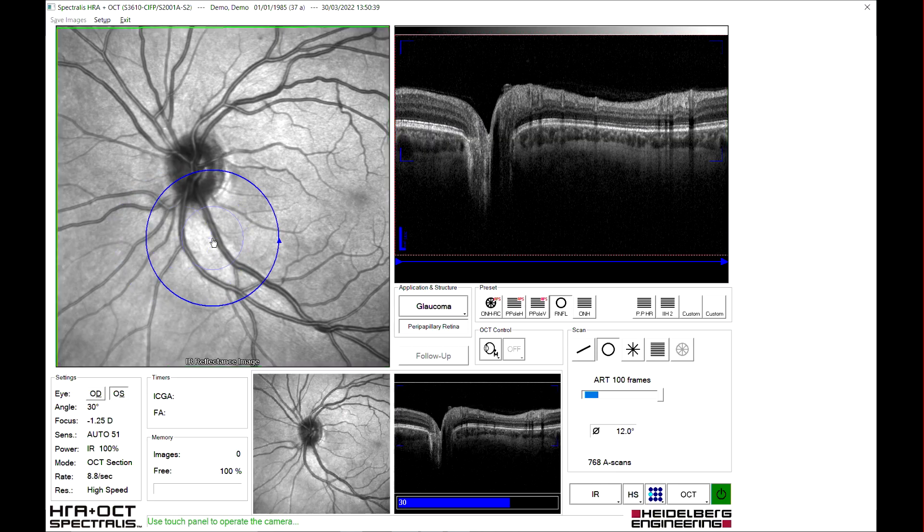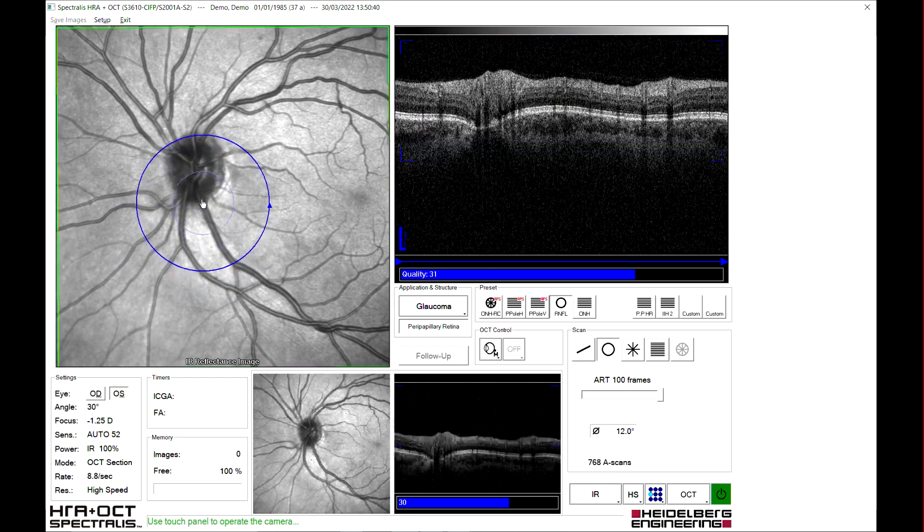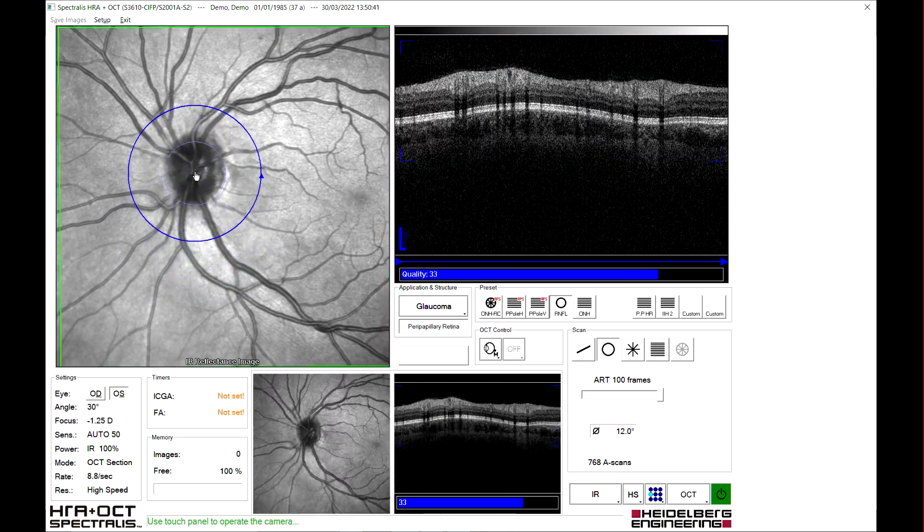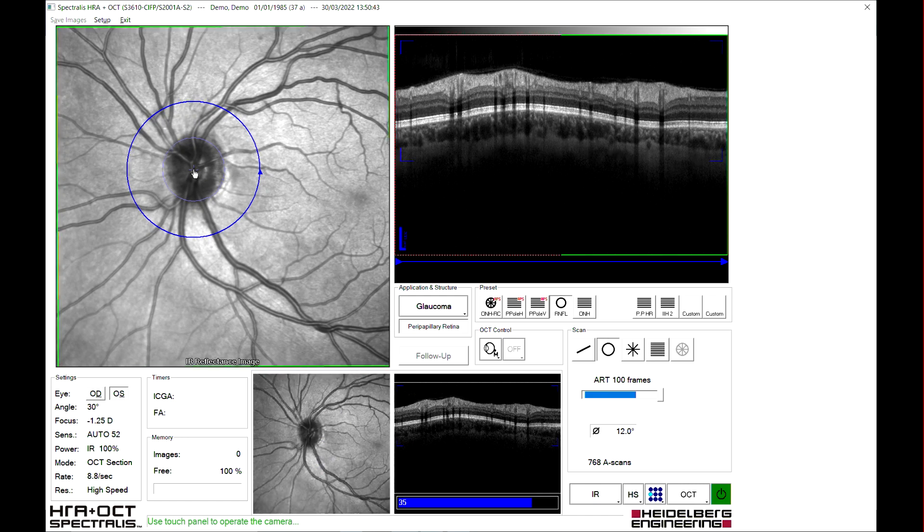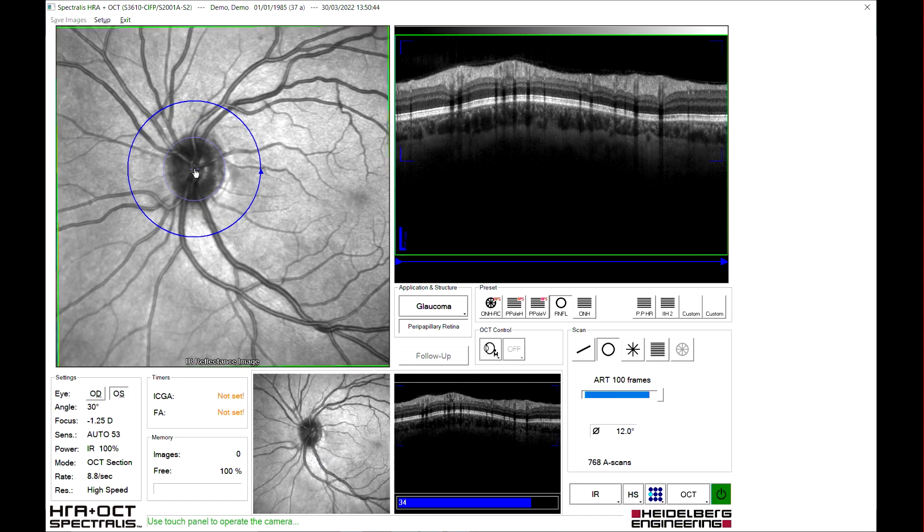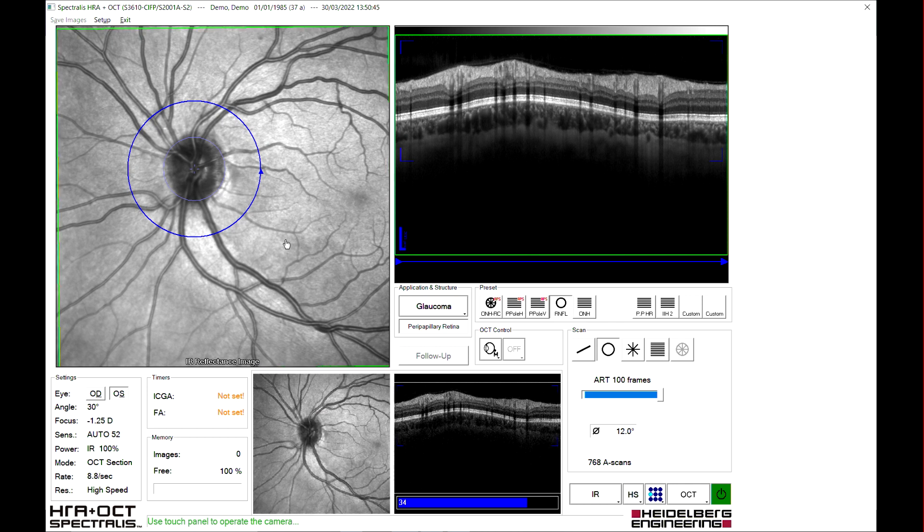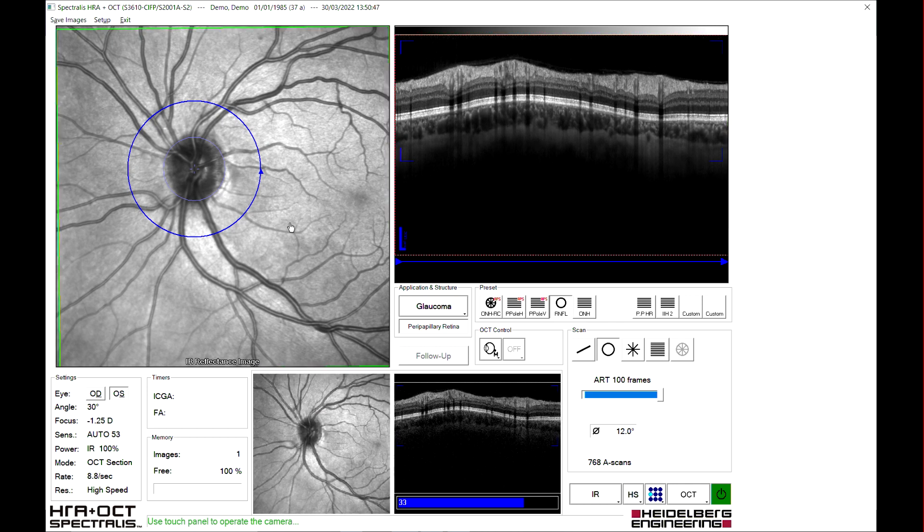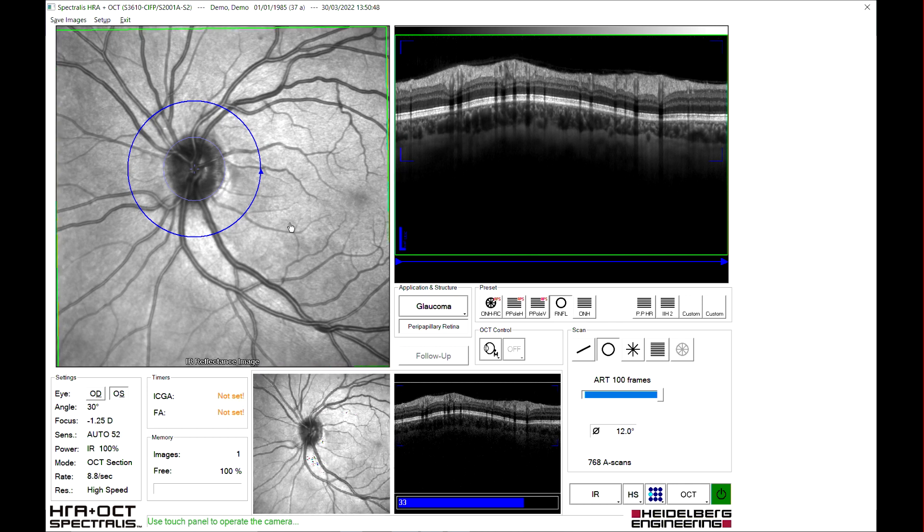It is vital to align the baseline scan correctly as this will determine the scan position for all subsequent images. The inner circle of the scan ring should be equidistant from the edges of the disc in the inferior, superior, nasal and temporal positions.